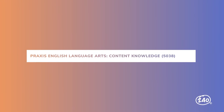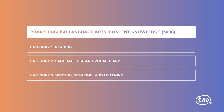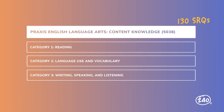The Praxis English Language Arts content knowledge exam consists of three content categories: Reading, Language Use and Vocabulary, and Writing, Speaking, and Listening. The exam contains 130 selected response questions in all. Categories 1 and 3 are worth the biggest chunks at 38 and 37 percent. Category 2 is worth 25 percent, so we'll need to make sure we're ready for that one too. We'll discuss key concepts for categories 1 and 3 and then finish up with category 2.